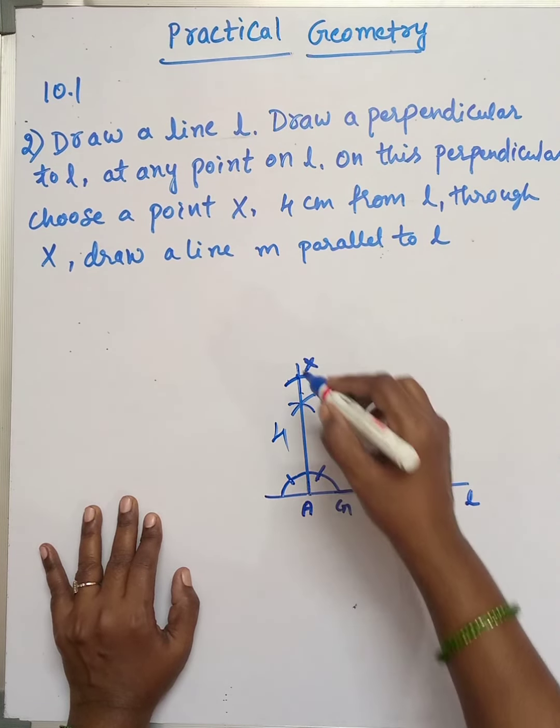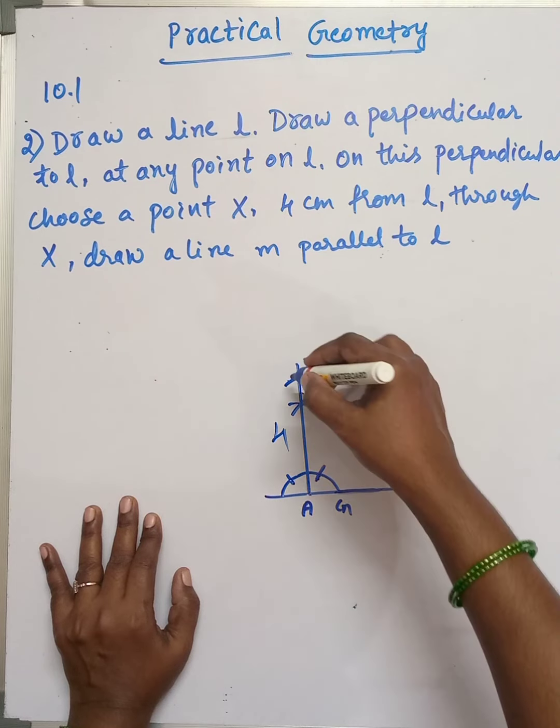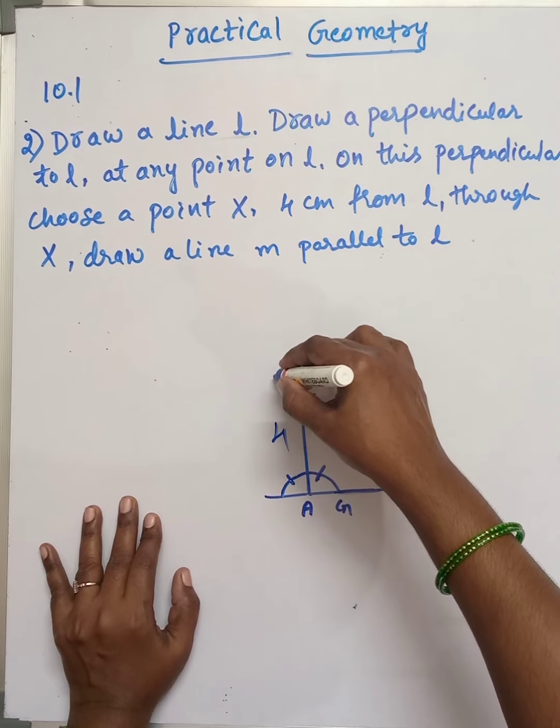With X as center, draw an arc to mark the measurement needed for constructing the parallel line M through point X.